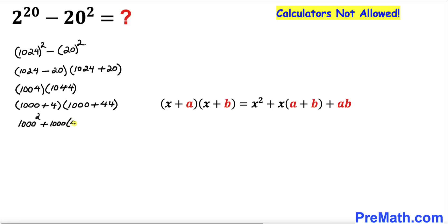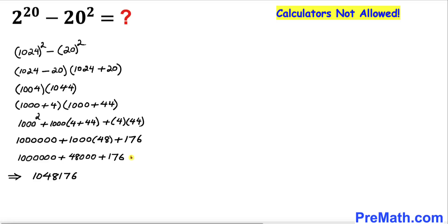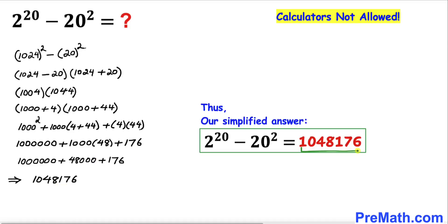...plus (4 + 44), plus 4 times 44. In the next step: 1000 squared equals 1 million; 4 plus 44 gives us 48, giving 48,000; and 4 times 44 is 176. Adding all three numbers, we get 1,048,176, and here's our simplified answer.